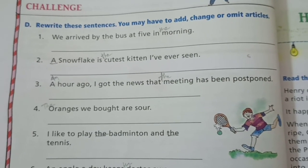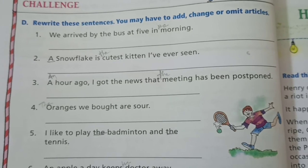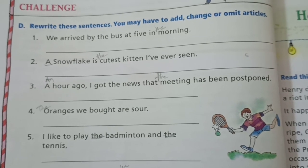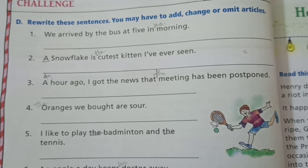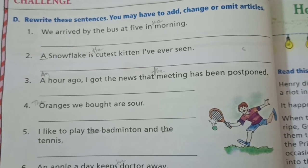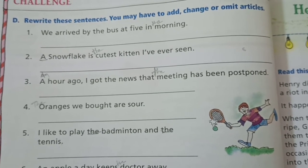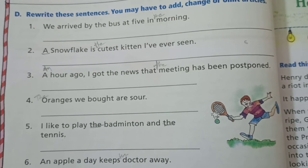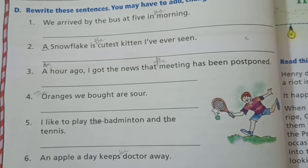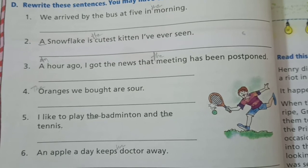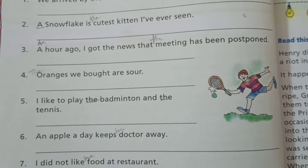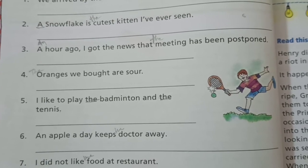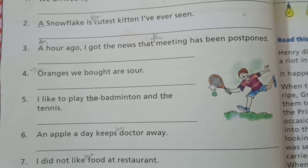Exercise D: we have to rewrite the sentences by adding or omitting articles. First: we arrived by bus at five in the morning — the article before 'morning' will be used. Second: we have to omit 'a' — answer: Snow Flag is the cutest kitten I have ever seen. Third: in place of 'a' we will write 'an' — an hour ago I got the news that the meeting has been postponed.